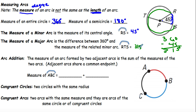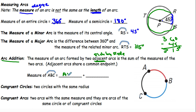Arc addition: the measure of an arc formed by two adjacent arcs — adjacent means side by side — is the sum of the measures of the two arcs. Adjacent arcs share a common endpoint. So the measure of arc ABC is arc AB plus arc BC. You take AB, whatever that is, and add it to BC.